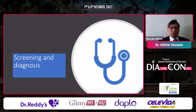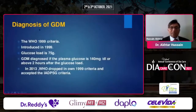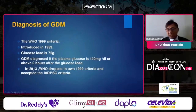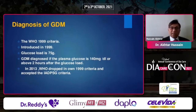Now we come to the question of screening and diagnosis. There are many diagnostic criteria today, but unfortunately there is no agreement. The WHO had a 1999 criteria using a 75g glucose load, diagnosing GDM if the 2-hour plasma glucose was 140 mg/dL or above. In 2013, WHO dropped its own 1999 criteria and accepted the IADPSG criteria — a significant change.